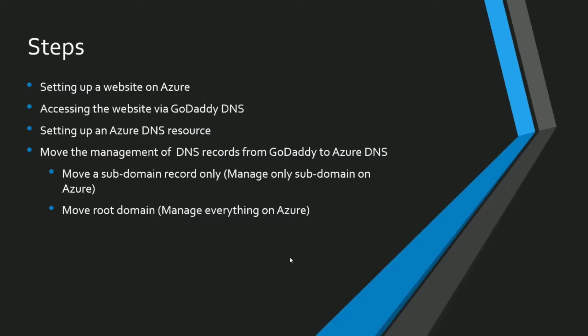I have broken up this tutorial into certain steps. First, we will set up a website on Azure. In the second step, we will try to access that website through GoDaddy. In the third step, we will set up an Azure DNS resource using the Azure web portal. In the fourth step, we will do the actual migration of DNS records from GoDaddy to Azure DNS — first moving the subdomain, then moving the complete domain.